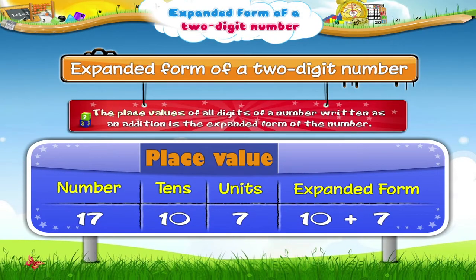Thus, the place values of all digits of a number, written as an addition, is the expanded form of the number.